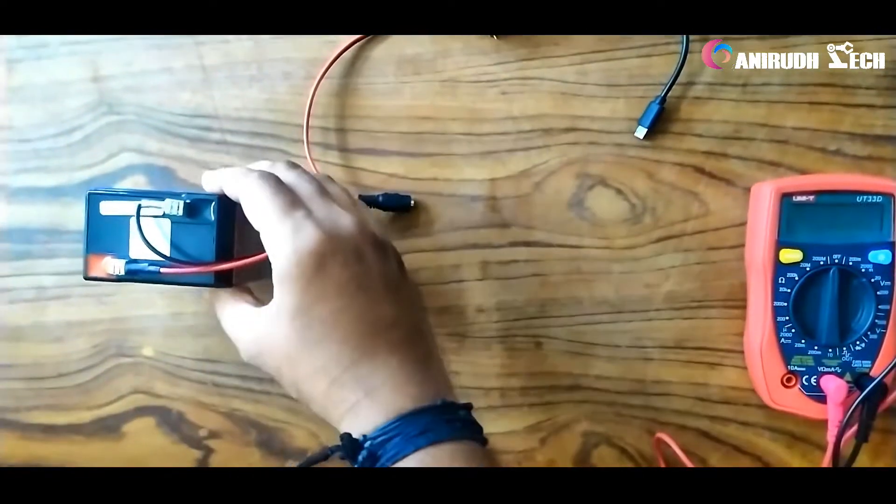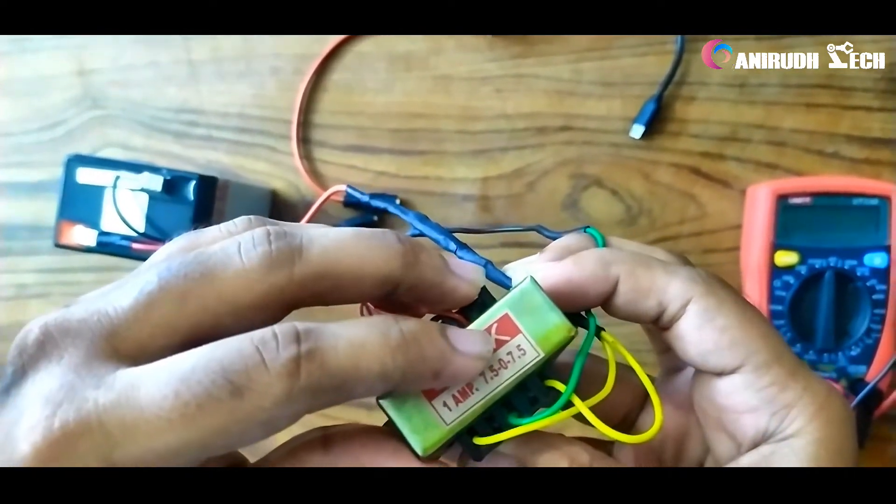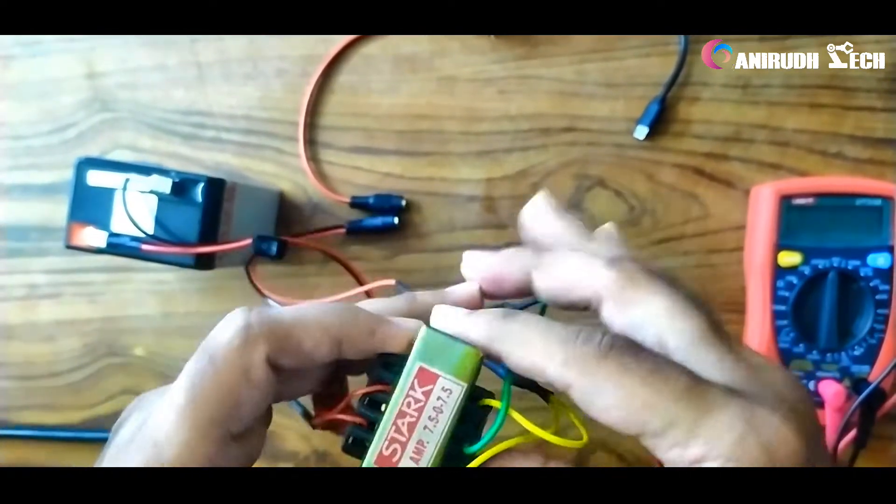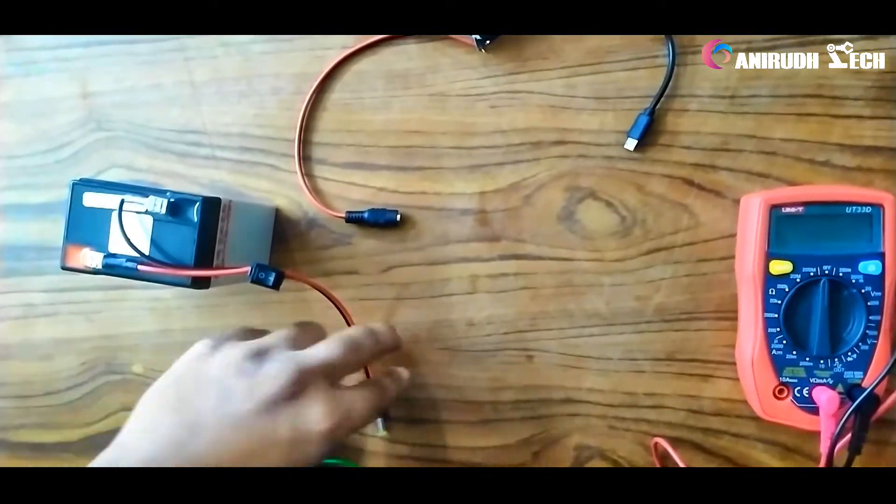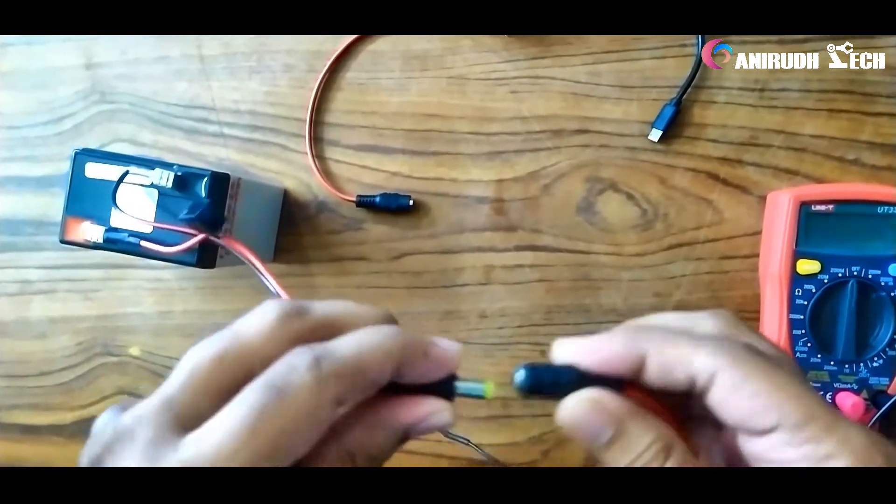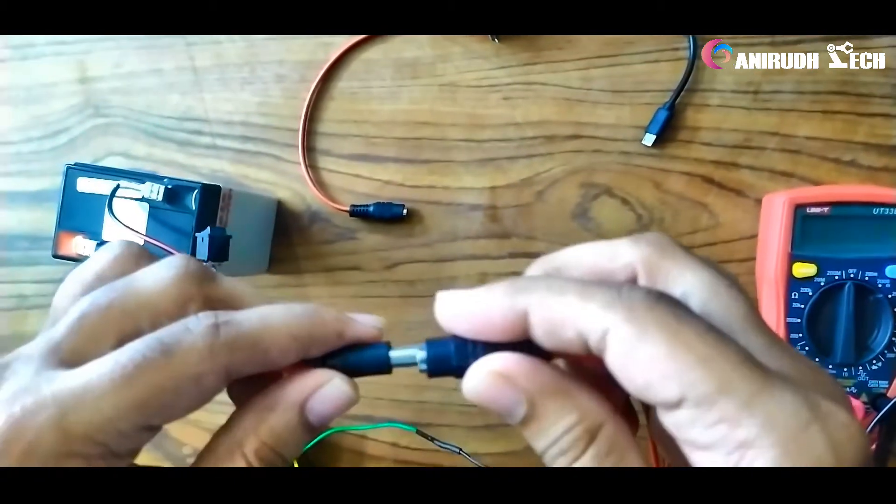You can see here it's 7.5 volt, 0 to 7.5. This is a center tap step down transformer of 1 ampere. I am using this for charging my battery. I have this female DC jack here for charging my battery.